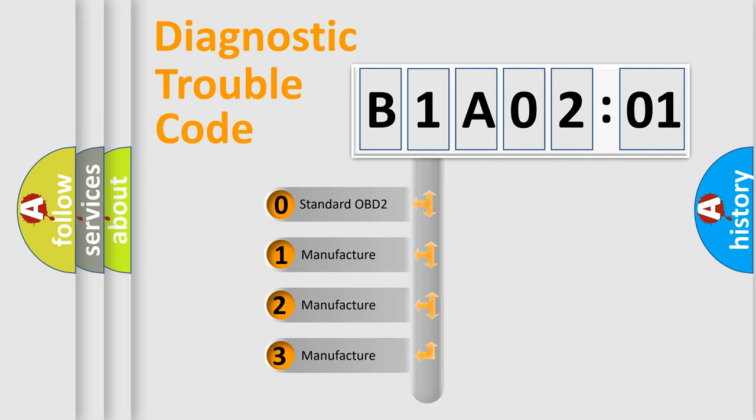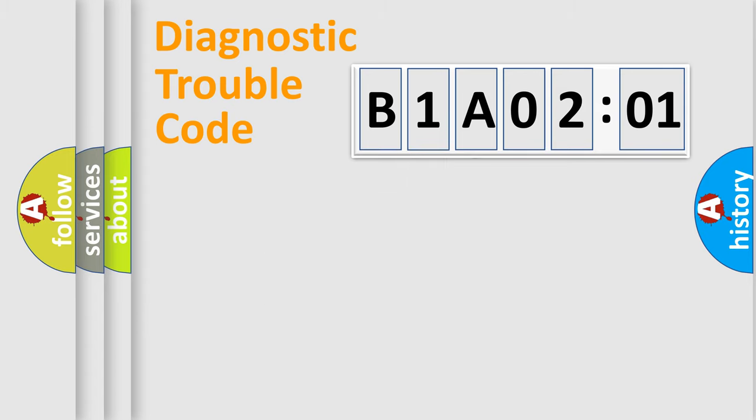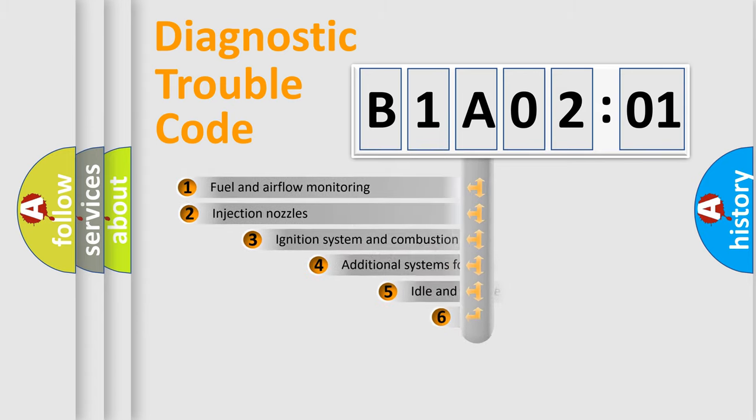If the second character is expressed as zero, it is a standardized error. In the case of numbers 1, 2, or 3, it is a more prestigious expression of the car-specific error.